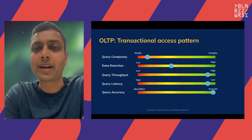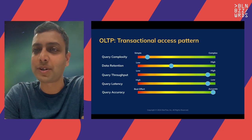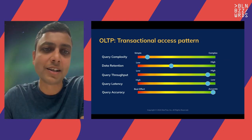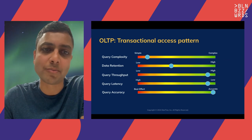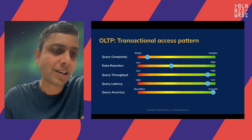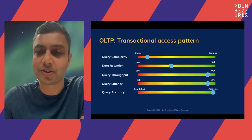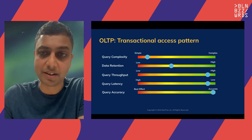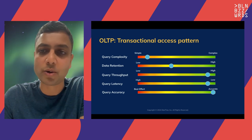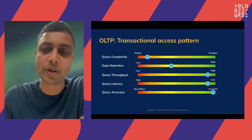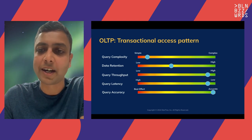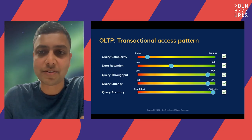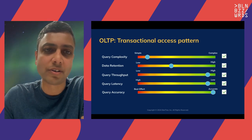If you try to break down what this means in terms of database requirements: for the transactional access pattern, query complexity is not that high — most queries are simple lookups for a given key. Data retention is moderate, typically weeks or maybe months. Query performance needed is quite high — very high QPS support as well as very low query latency — and a high degree of query accuracy. OLTP databases satisfy all these constraints just fine; they're really built for this kind of access pattern.